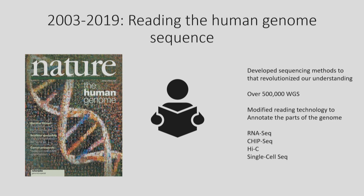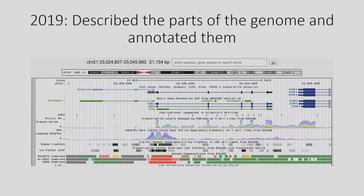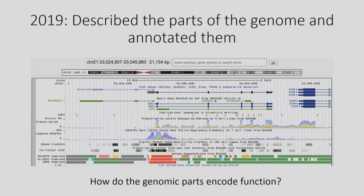These are the technologies we have available. In 2019, we've described the parts of the genome — we know the genes, regulatory elements, and the organization of the genome. We've managed to annotate the genome with the chromatin state, and where transcription factors are binding. But even with this list of parts and some notes about what these parts are and what's going on around them, we still don't understand how these parts lead to a functional genome.